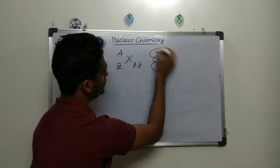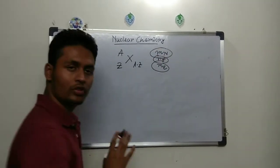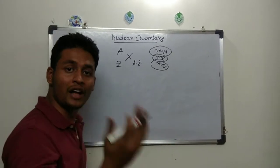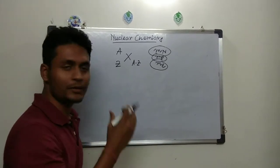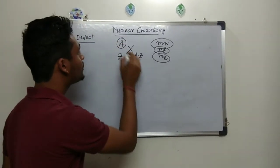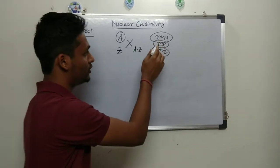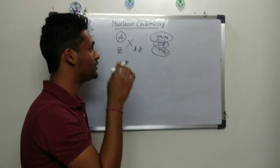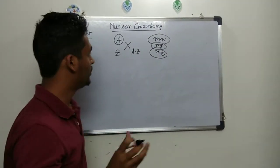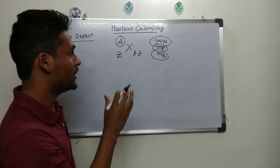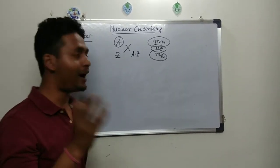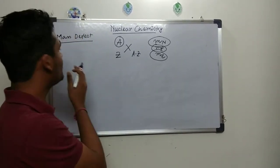Now, the mass we get from mass spectrometry and the mass we get by adding the masses of individual nucleons — protons and neutrons — are not the same. There is some mass loss, and that loss of mass is called mass defect.